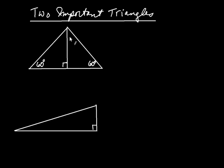That bisects this angle, which means each of these is 30 degrees — so this is 30 degrees, and so is this one as well. I've created, in both cases, 30-60-90 triangles.